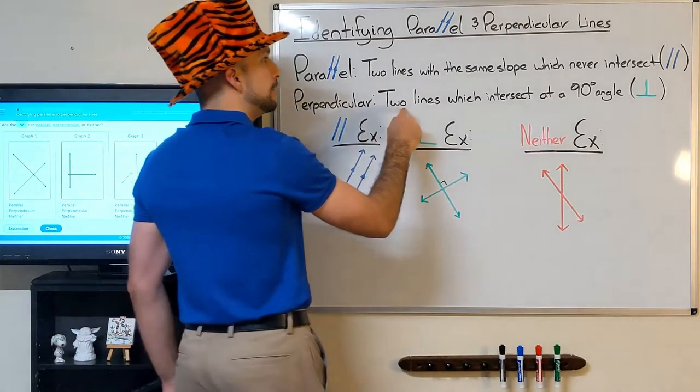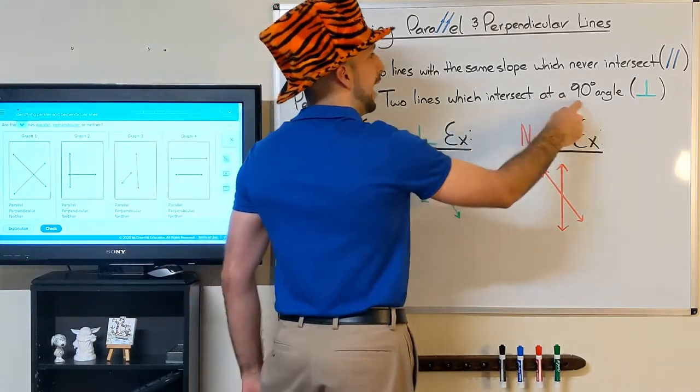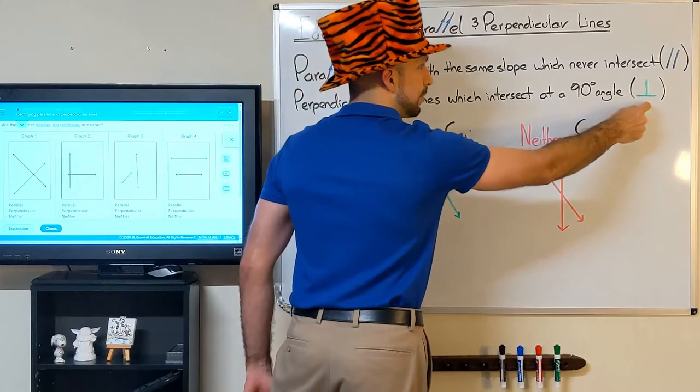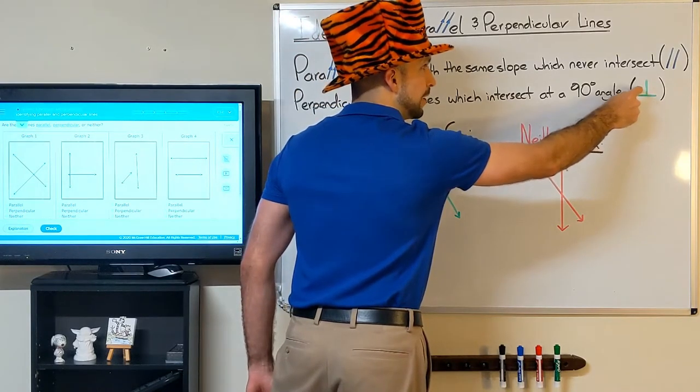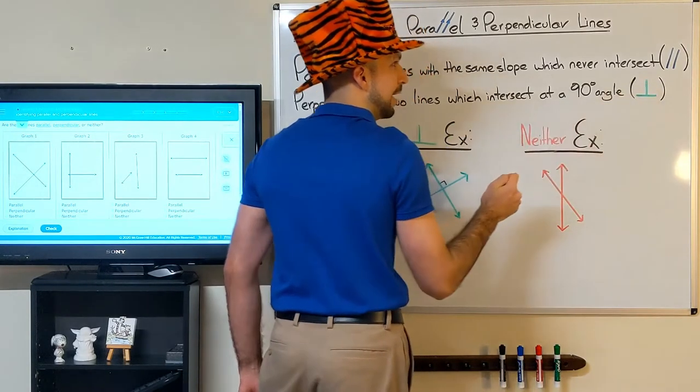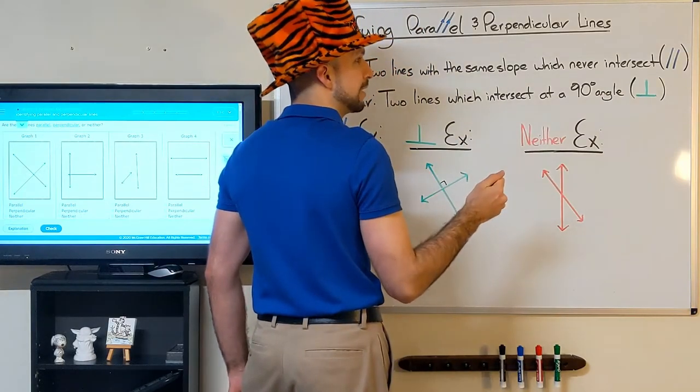Perpendicular lines, however, do intersect at a 90 degree angle. The symbol looks like this, and you can even see in this symbol a 90 degree angle on either side of those two intersecting lines.